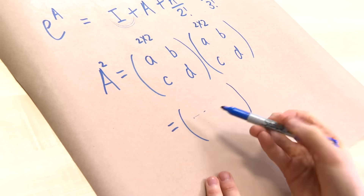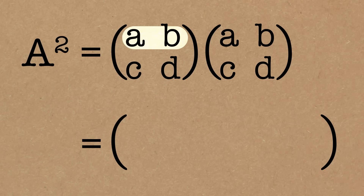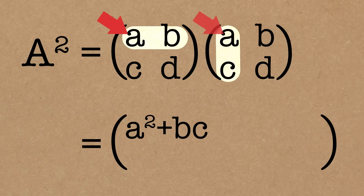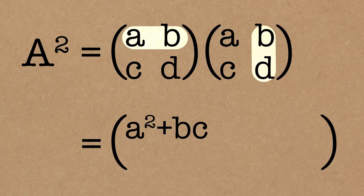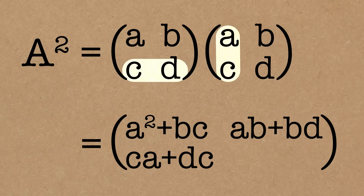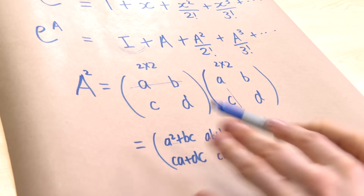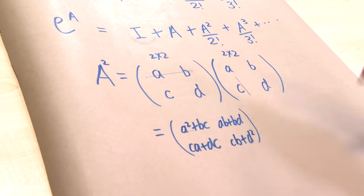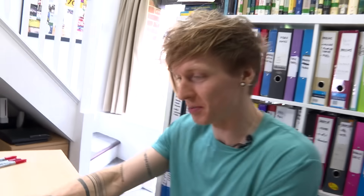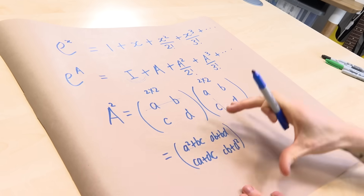The first entry is the first row times the first column of my answer, giving A times itself plus B times C — so A squared plus BC. Then first row, second column: AB plus BD. Second row, first column: CA plus DC. And second row, second column: CB plus D squared. So this is A squared, following the rules of matrix multiplication. For A cubed, we'd multiply by another A and do the same again. Importantly, we are not taking the numbers inside to the power squared — that's different. We follow the standard rule of matrix multiplication.